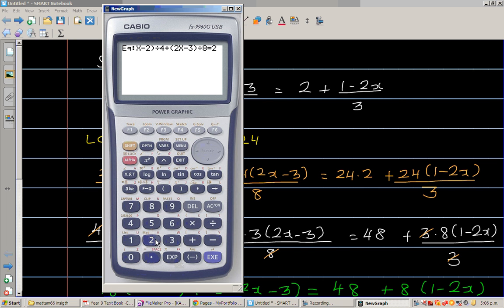2 plus in the bracket 1 minus 2x close the bracket divided by 3. And then you go to solve. F6.